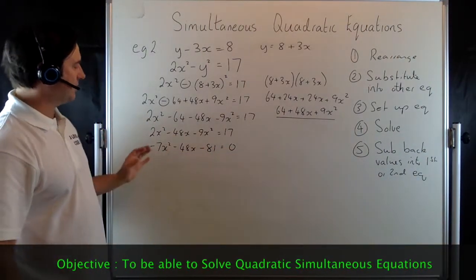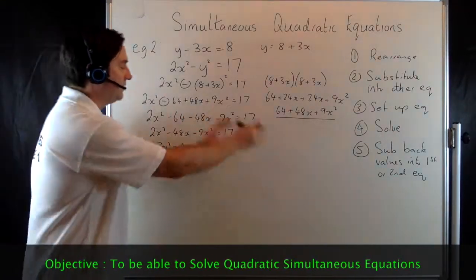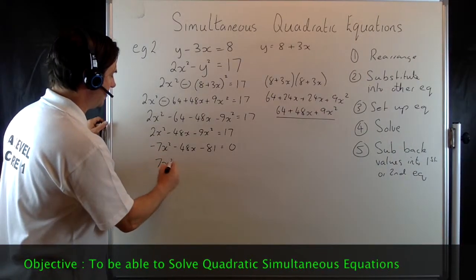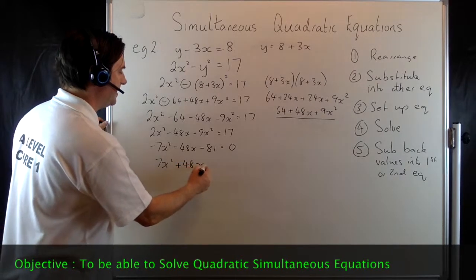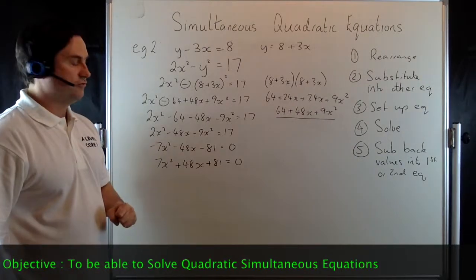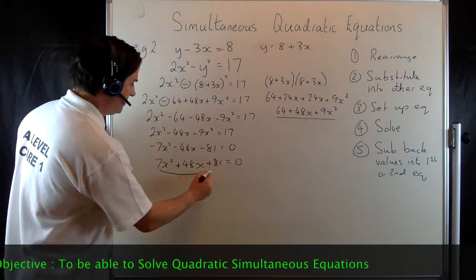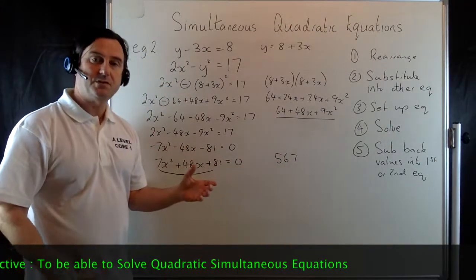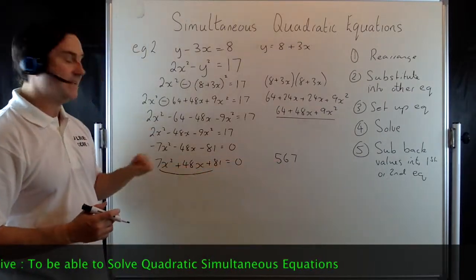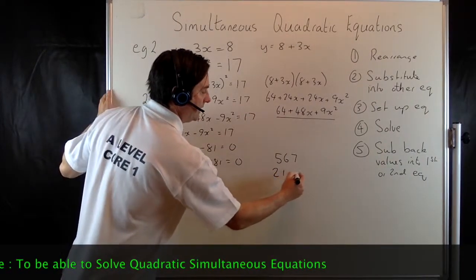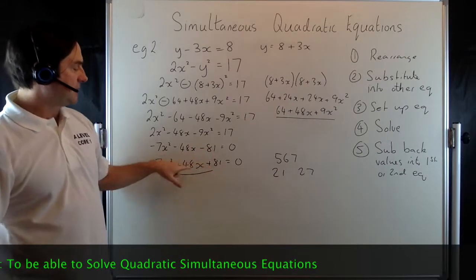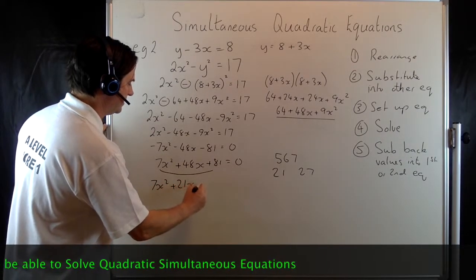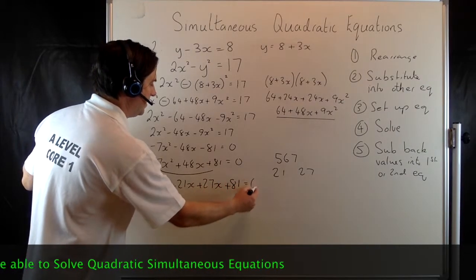I don't want these as negatives, so I'm going to make them positives — either by moving all terms over to the other side or by multiplying through by negative 1. So multiplying by negative 1 gives 7x squared plus 48x plus 81 equals 0. We've now got a quadratic and we're going to factorize it. To factorize, we multiply the first number by the last number: 7 times 81 gives 567. We're looking for two numbers that multiply to give 567 and add to give 48 — that's 21 and 27. We now split the 48x into 21x and 27x.